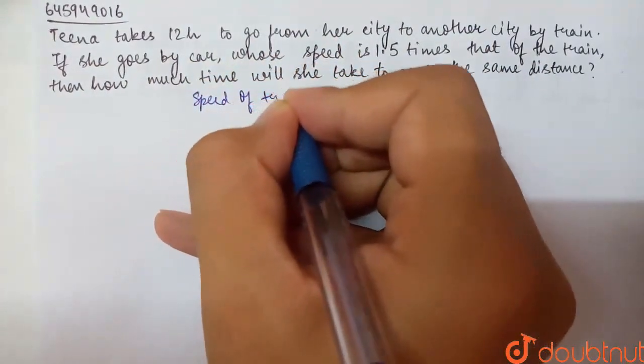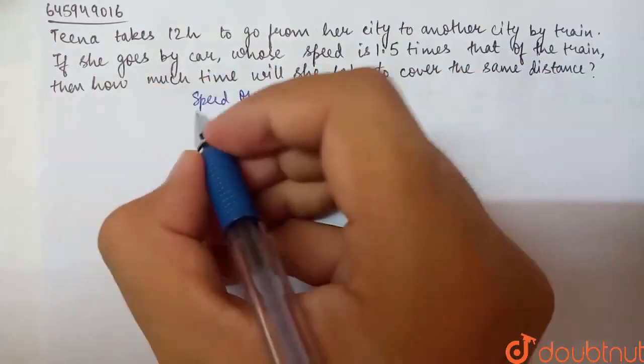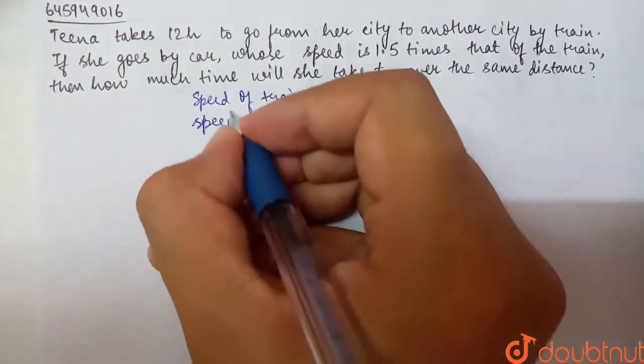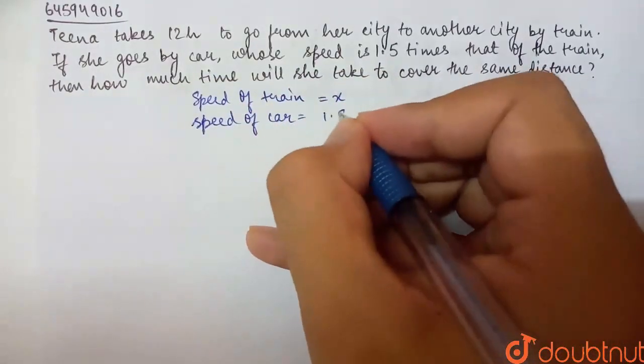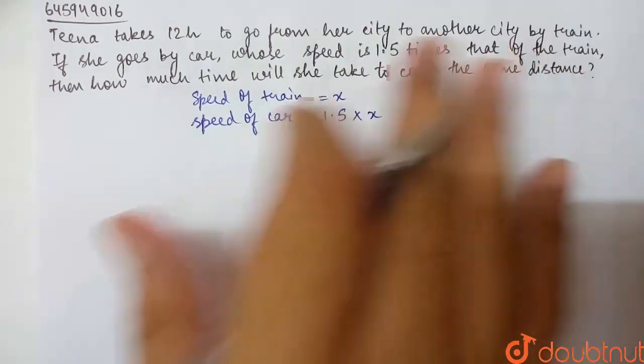Speed of train. Let's suppose we have X for the train. And speed of car, we have 1.5 times X. This will be our speed of car relative to that of the train.